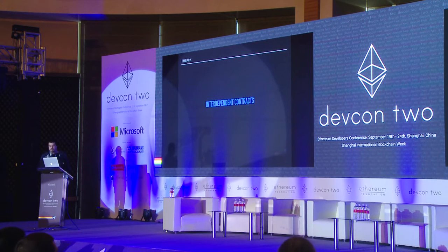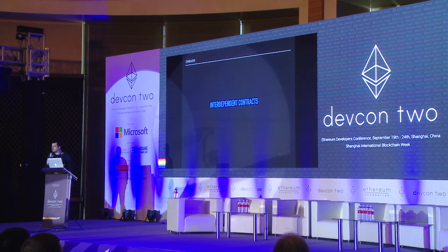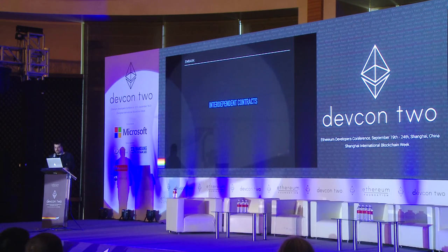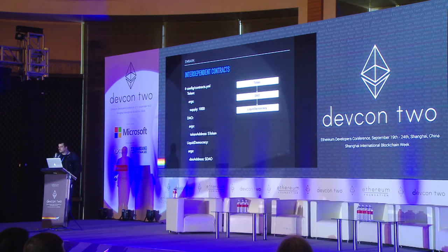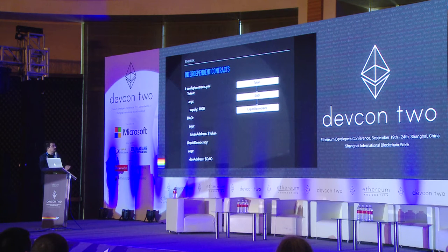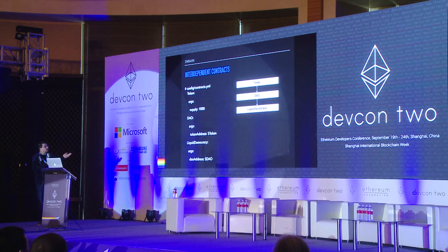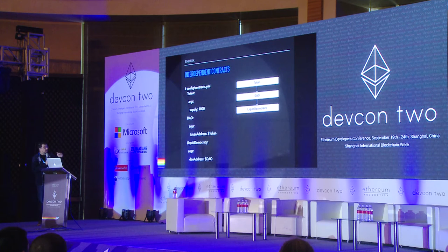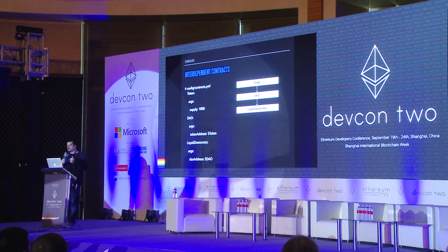Another thing that Embark is pretty good at is dealing with multiple contracts that are dependent on each other. Let's say you have three contracts that each depend on each other. You need a token to be deployed first, then deploy the DAO, and once that's deployed, you deploy the liquid democracy. You can specify in a configuration file, for the DAO, dollar sign token, which tells Embark this contract is dependent on the token — deploy the token first and then pass the address to the DAO. You can have a whole network of contracts each depending on each other, and Embark will determine the right order to deploy them.